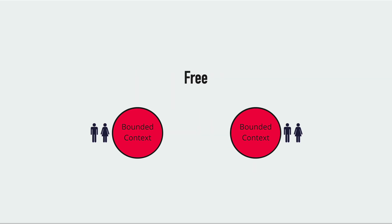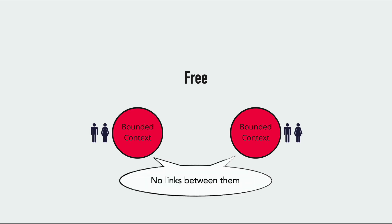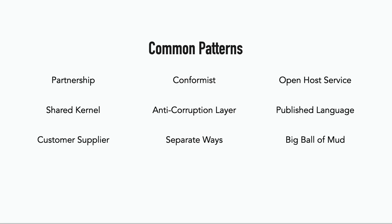And lastly, two teams or bounded contexts can be free from each other's influence if changes in one bounded context do not influence the other's success or failure. There is therefore no organizational or technical link of any kind between these two teams. So those are the three types of relationships between teams, and depending on what relationship you have with another team, you may observe one of these nine patterns in play.